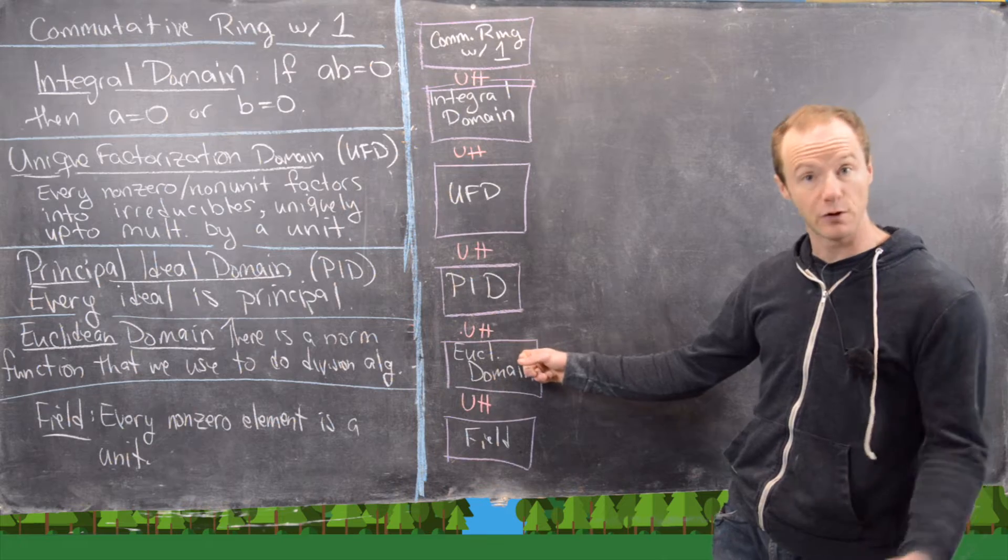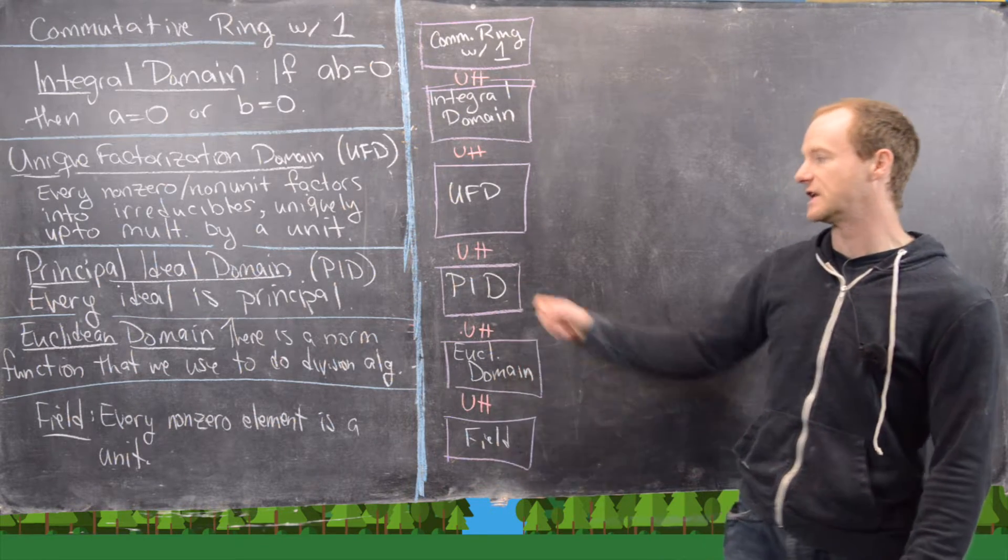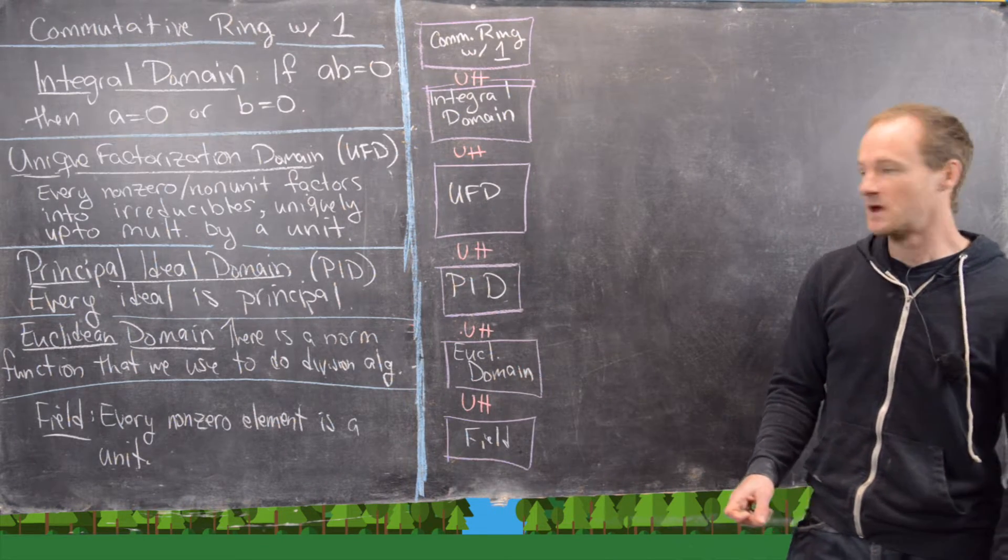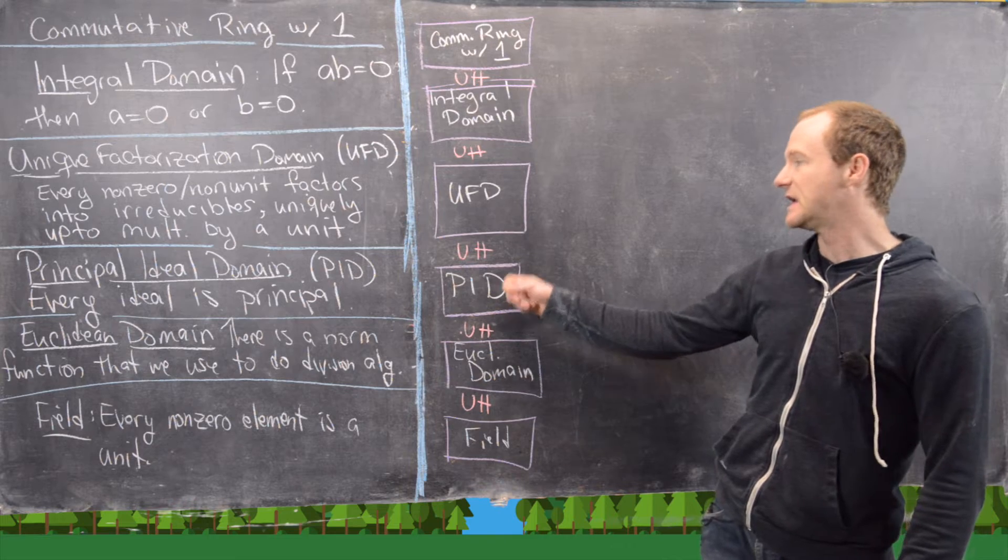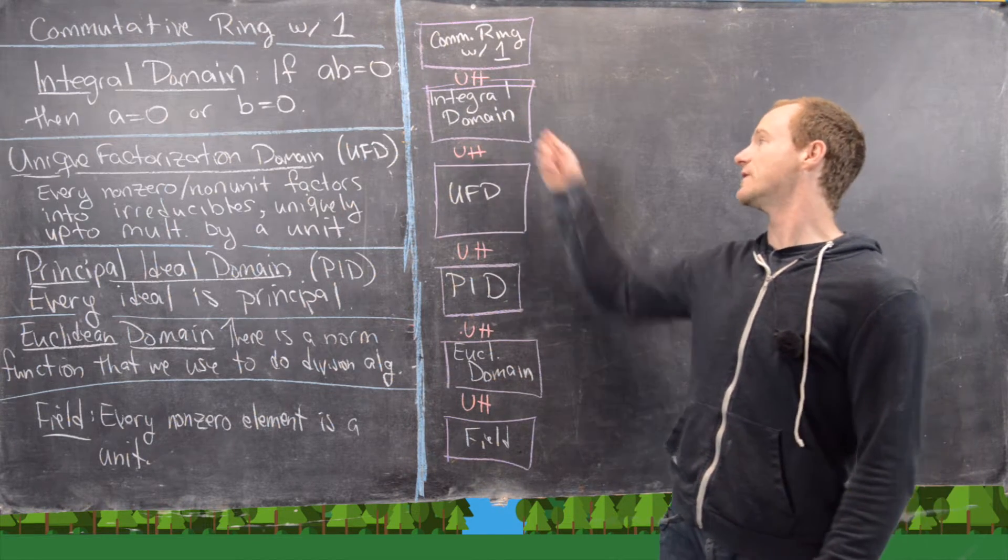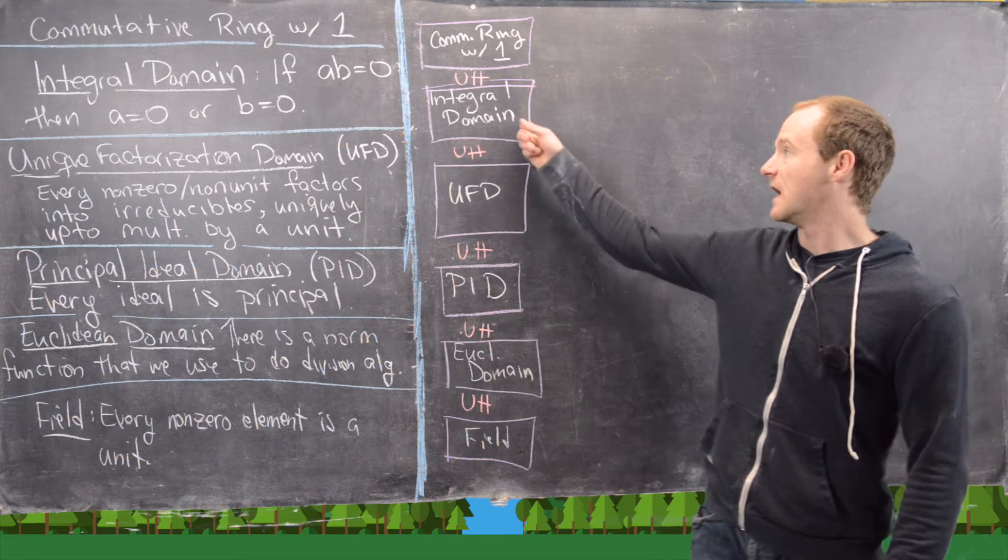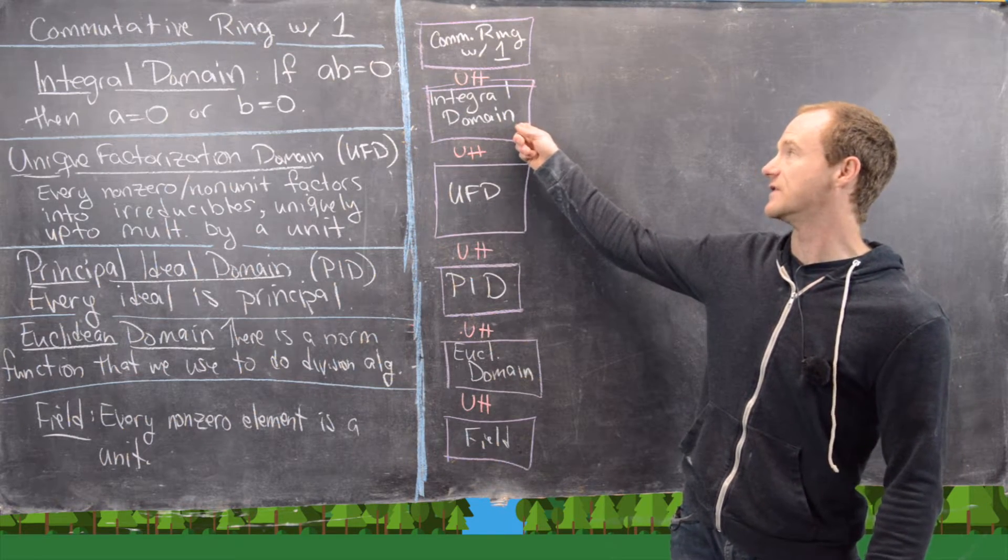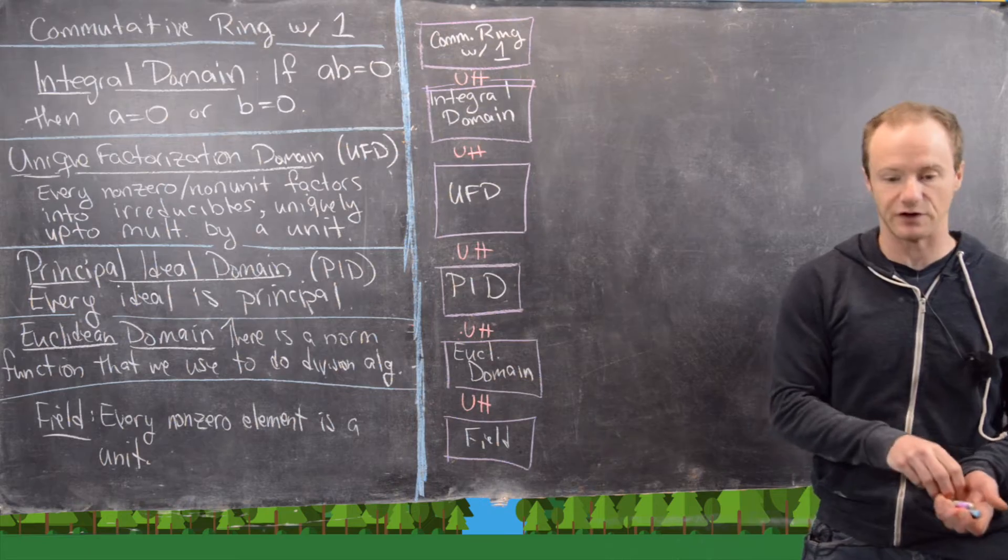Then next we proved in a previous video that every Euclidean domain is a PID. And that every PID is a UFD. But then by definition a UFD is an integral domain. And then finally also by definition an integral domain is a commutative ring with one.